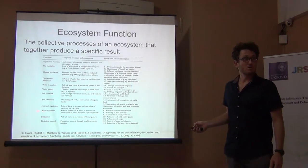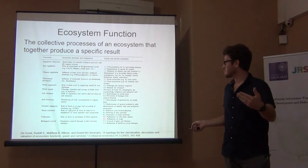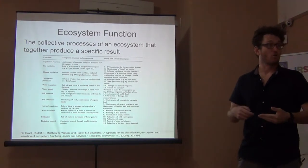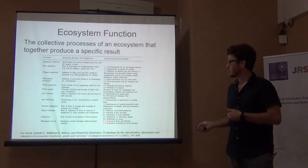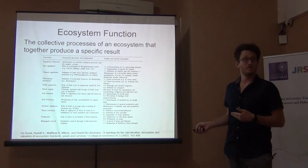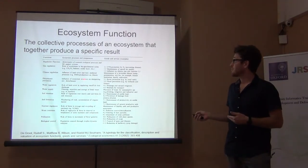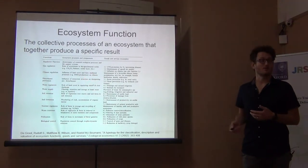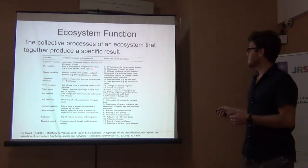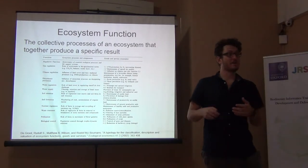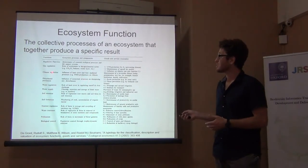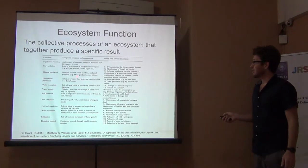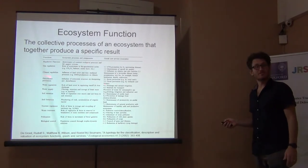For example, pollination results from the role that biota play in the movement of floral pollen — that's a process resulting in the function of pollination. Climate regulation comes from the influence of land cover and biologically mediated processes on the climate. All of these processes occurring in different land uses produce different functions for climate regulation, and all of these then translate into different ecosystem services.